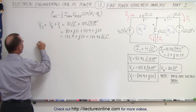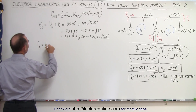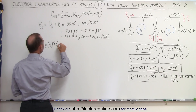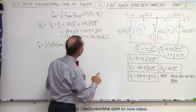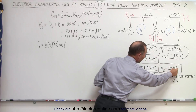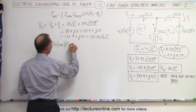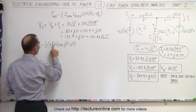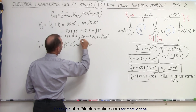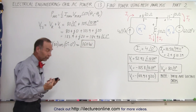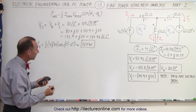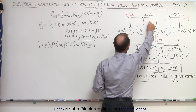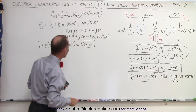Let's start with the easy one — the resistor. The average power across the resistor is one-half times the maximum current, which is four, times the maximum voltage, which is 80, times the cosine of the phase angle difference between the current and voltage. The phase angle for the current is zero and for the voltage is zero, so that's cosine of zero, which equals one. One-half times 4 times 80 is 160 watts. That is power consumed by the resistor because the current goes across the resistor in the same direction as the mesh, so that's a power loss.